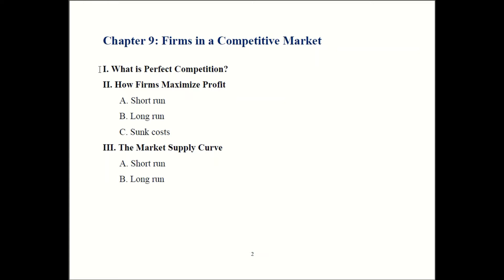We'll dedicate a chapter to each possibility, but we're starting with perfect competition, looking at it in both the long run and the short run. There's a reason this chapter comes after the chapter on costs — long run costs can be different because firms have more flexibility. They're not locked into their contracts anymore; they can renegotiate. We'll also talk about sunk costs. Once we figure out how firms maximize profit, that lets us derive the firm's supply curve, helping us find the market supply curve in both the long run and the short run. The market supply curve is just a combination of all the individual firms' supply curves.